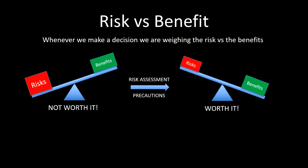An important thing you need to know is how to reduce risks. You will have done control assessments where you've had to do a risk assessment — either the data analysis in year 10 or the investigation in year 11. That involves taking precautions to try and reduce the risk. Sometimes that means reducing the risk from a situation where you would not do something to one where you would, and sometimes it just means making the risk as small as possible in a task you're going to do anyway.